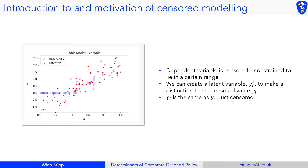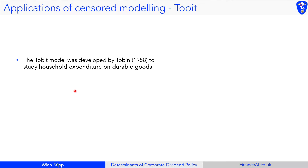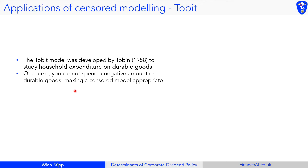We say the dependent variable is censored and constrained to lie above zero, and we create this latent variable called yi*. The Tobin model was developed by Tobin in 1958, and he was studying household expenditure on durable goods. Of course, expenditure on durable goods must be in the positive region, which is why the censored model is appropriate.